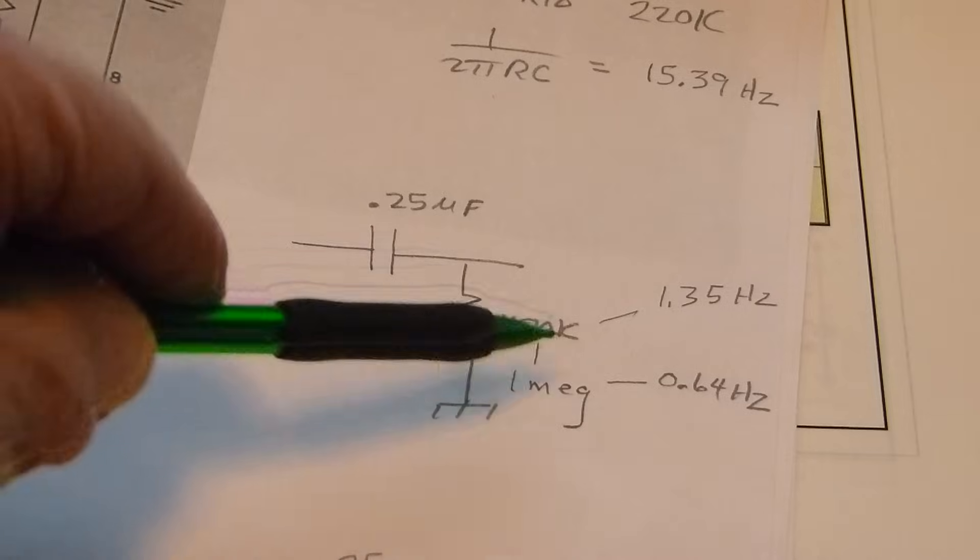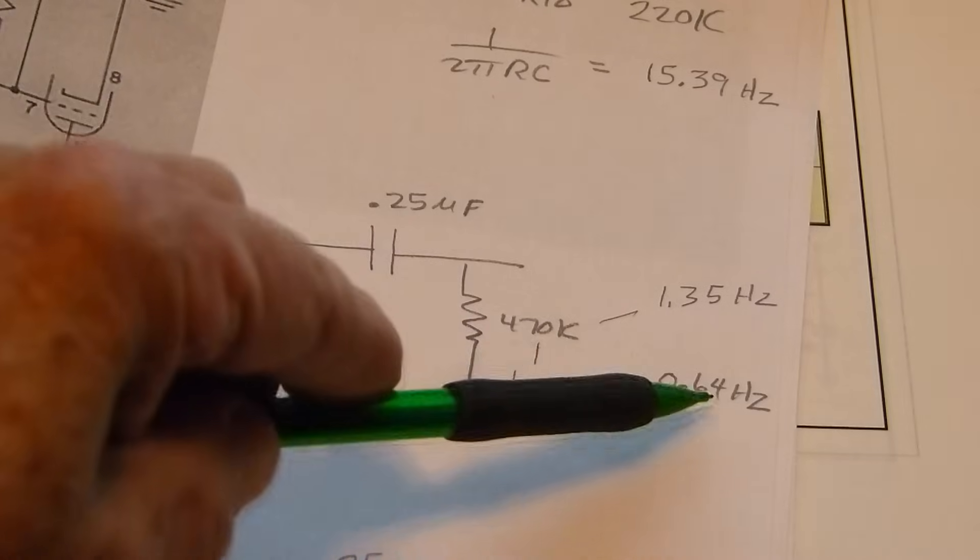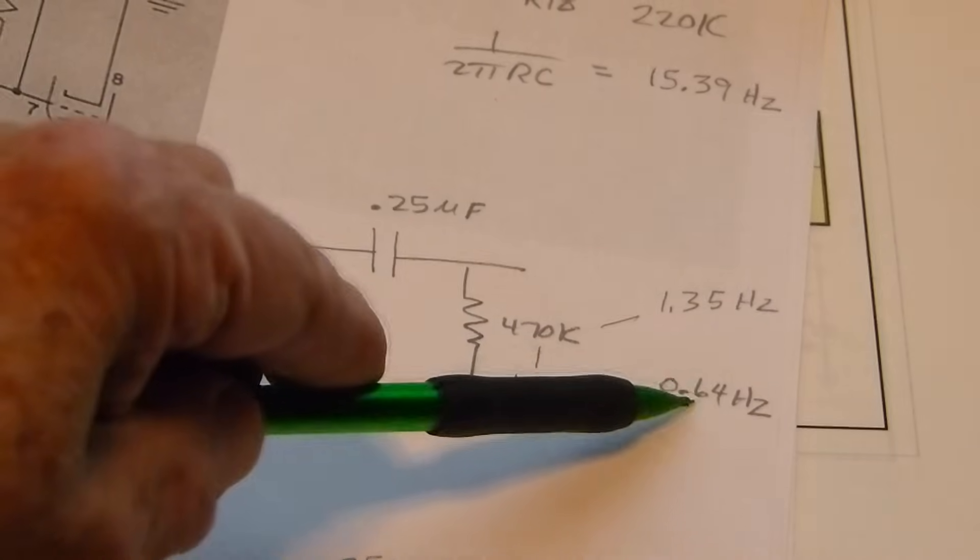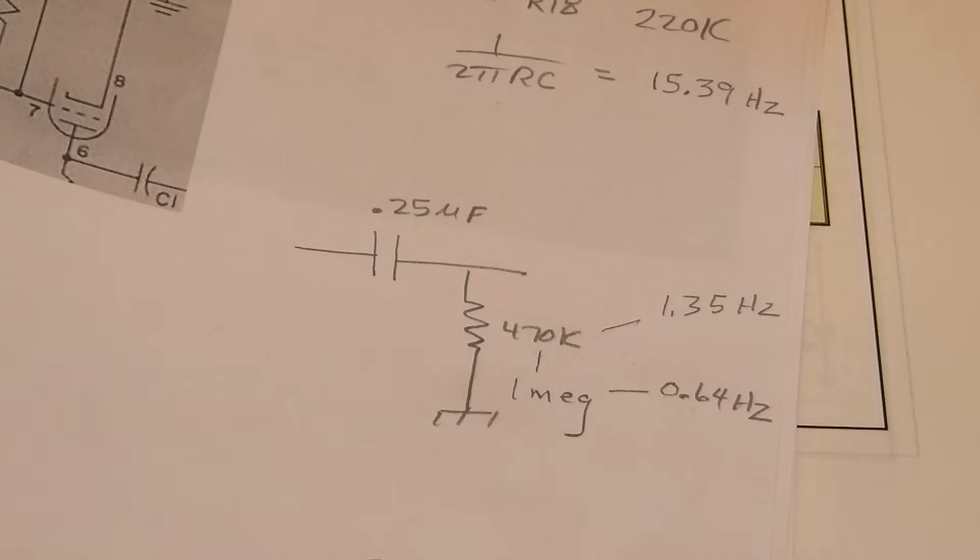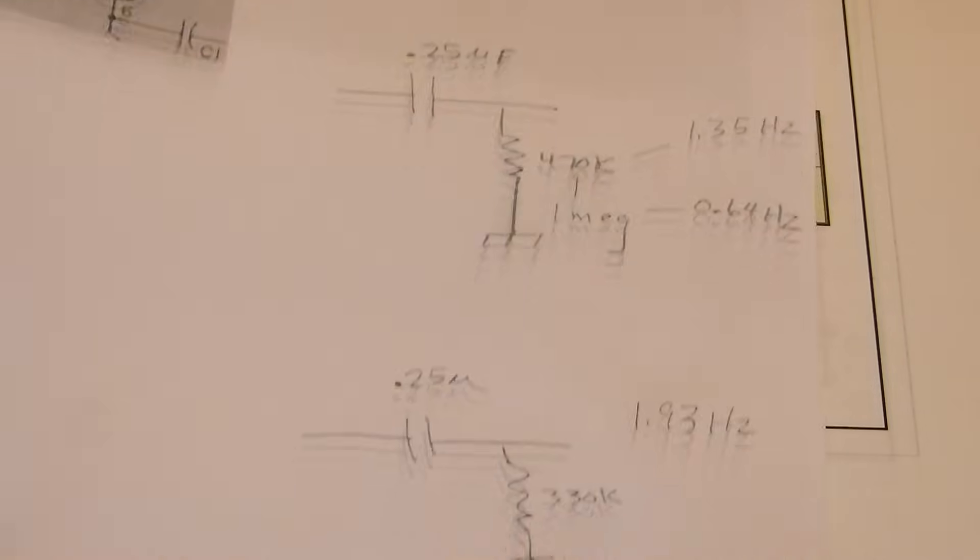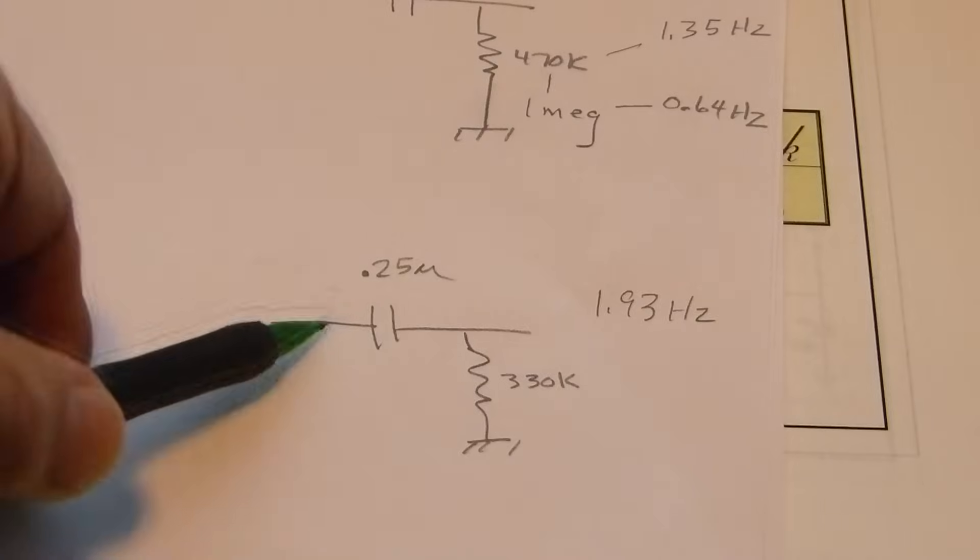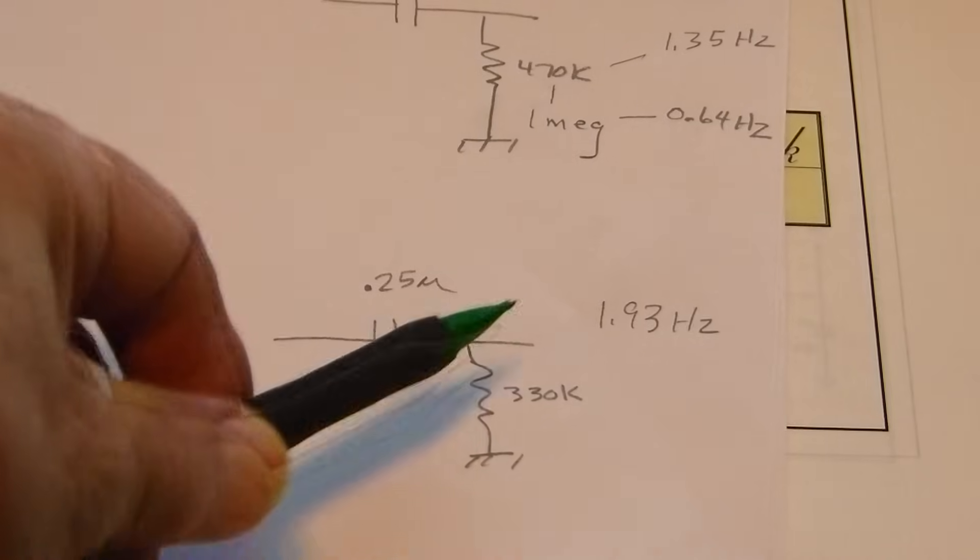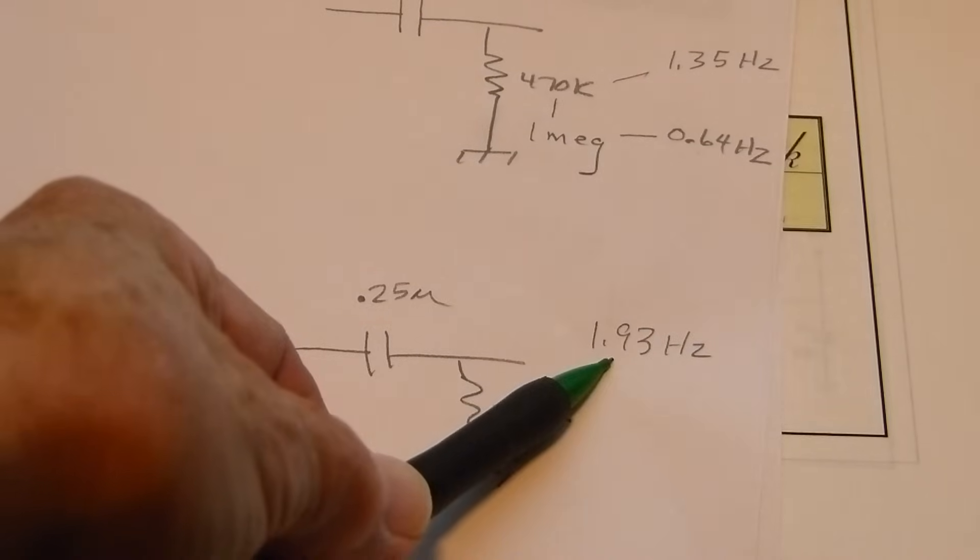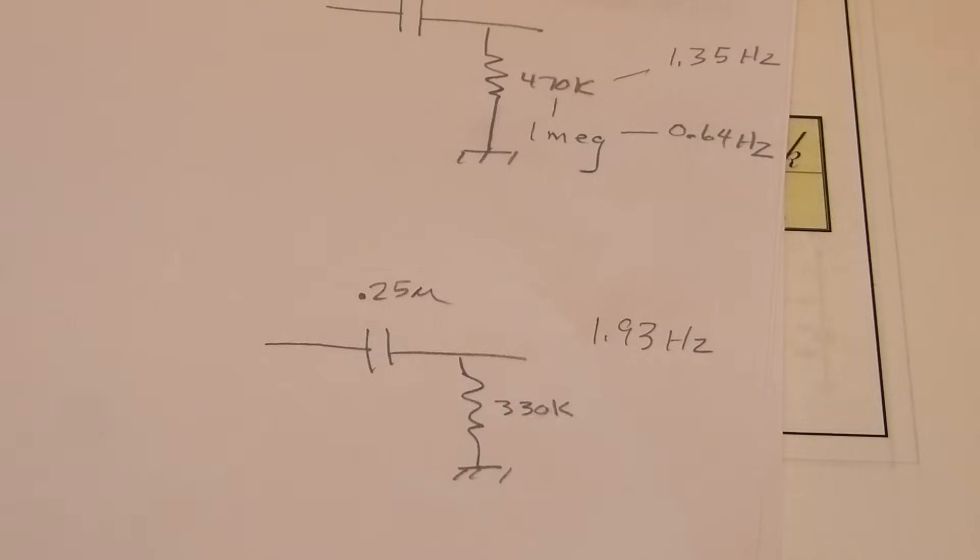Same capacitor 0.25 and a 1 meg goes down to 0.64 hertz. I'm going to show you how this works on LT Spice. In the little jewel amplifier we have a 0.25 and a 330k, where its corner frequency is 1.9 hertz, so very low stuff.